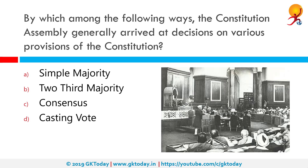By which among the following ways did the constituent assembly generally arrive at decisions on various provisions of the constitution? The correct answer is via consensus — that is, most of the members or a majority of members had to agree on something. The constitution of India was drafted by the constituent assembly and implemented under the cabinet mission plan on 16 May 1946. The members were elected by the provincial assemblies by a single transferable vote system of proportional representation.